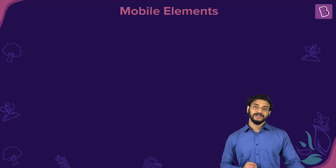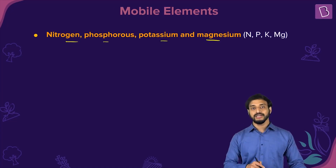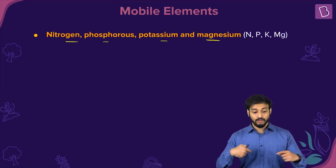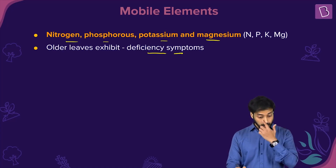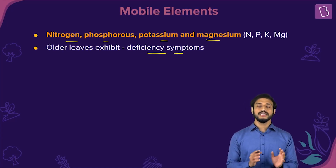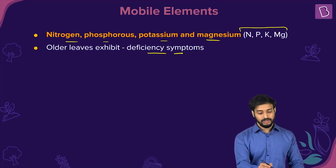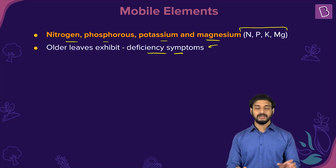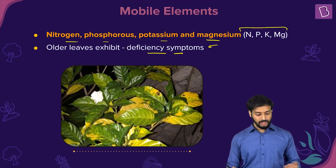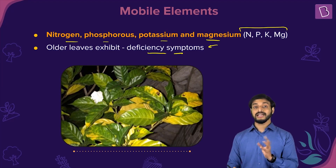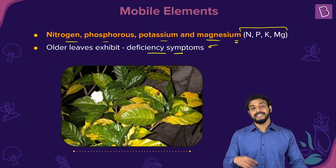So the mobile elements — nitrogen, phosphorus, potassium, and magnesium — move from older leaves to newer leaves. This means older leaves exhibit the deficiency symptoms, because they have lower amounts of these elements. You can see yellowing of the older leaves as a result.